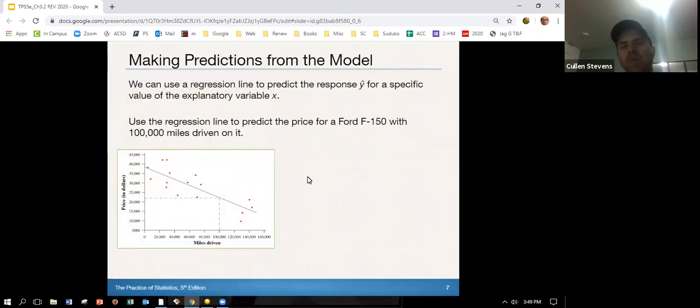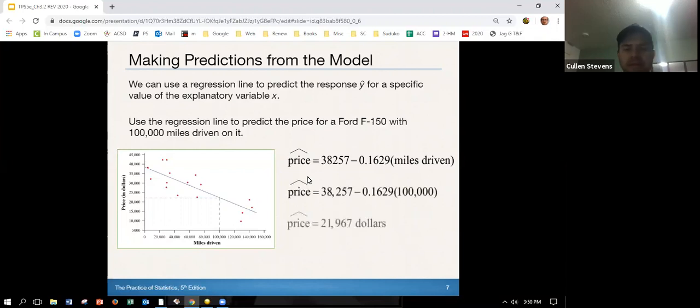So then if we have a model, how do we make predictions from that? We can use a regression line to predict the response y hat for a specific value of explanatory variable x. Let's use the regression line to predict the price of the Ford F-150 with 100,000 miles. So remember this is a regression model that we had and we'll learn how to do that by ourselves, but right now it's still given to us. So what do we have? We want to predict the price. We have the miles driven as 100,000 so we just pop in 100,000 into miles driven. Do the math and we can see the price is $21,976. Remember that hat over the price reminds us that this is predicted. We would continue to, from our model, say that's what it's predicted to be. So a Ford F-150 truck with 100,000 miles is predicted to cost $21,967.